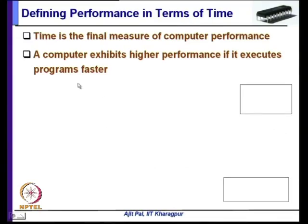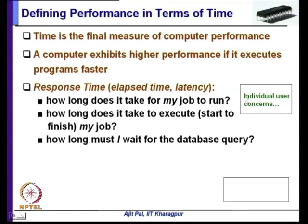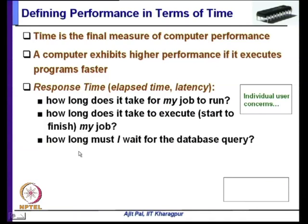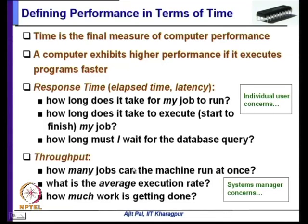Whenever you measure time, there are various ways to do it. From an individual perspective, response time or elapsed time is the important factor. An individual user will submit a task and when he gets the result, that elapsed time is what matters — it is the time one has to wait for the result. On the other hand, for a system manager, throughput is the most important parameter, because he is more interested in how many jobs the machine can run at once.